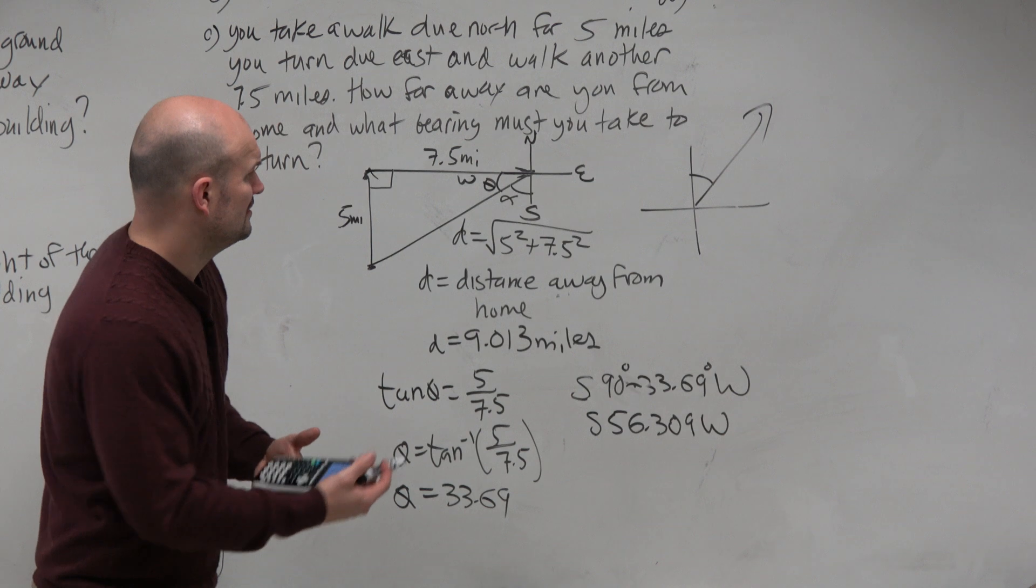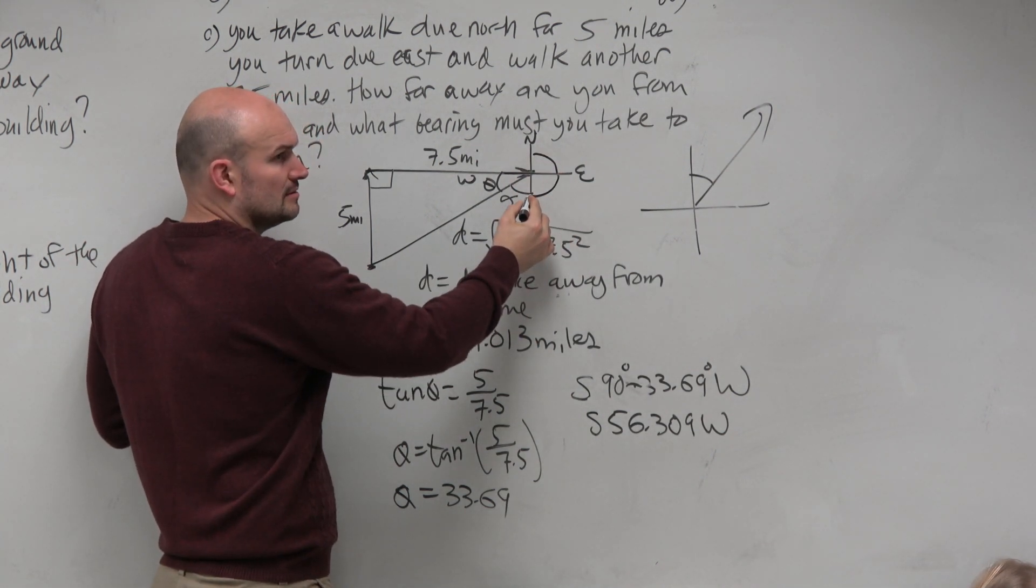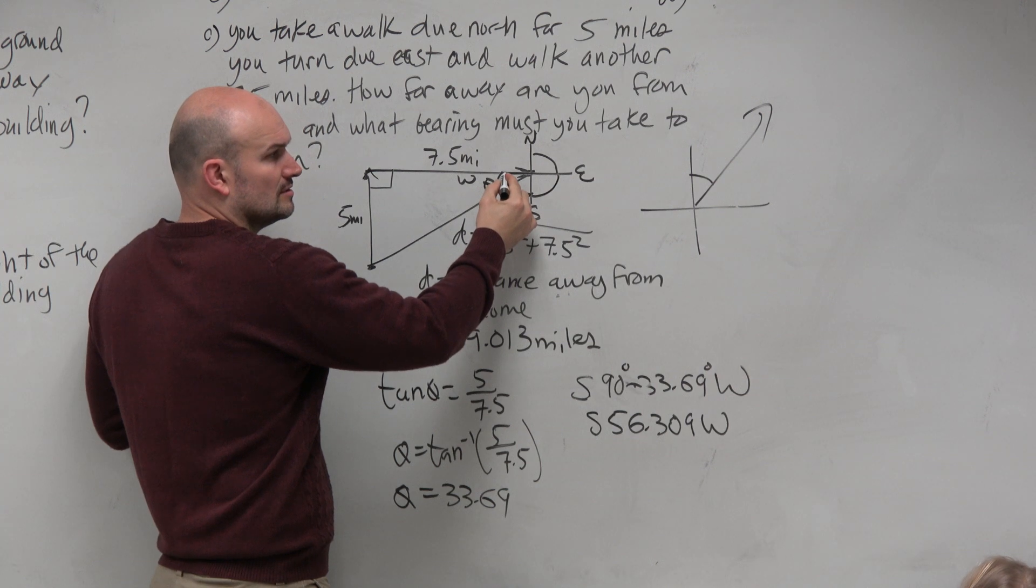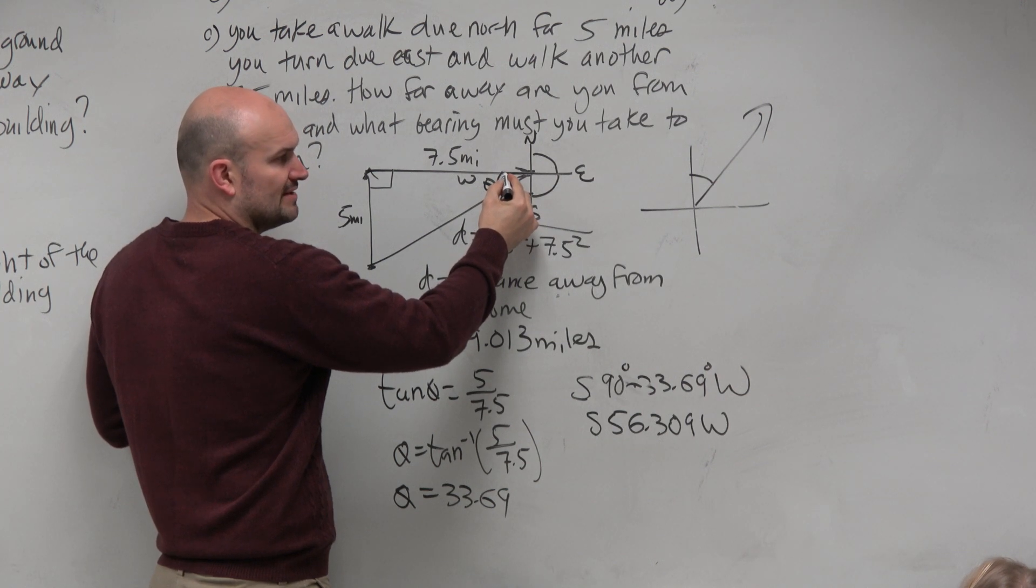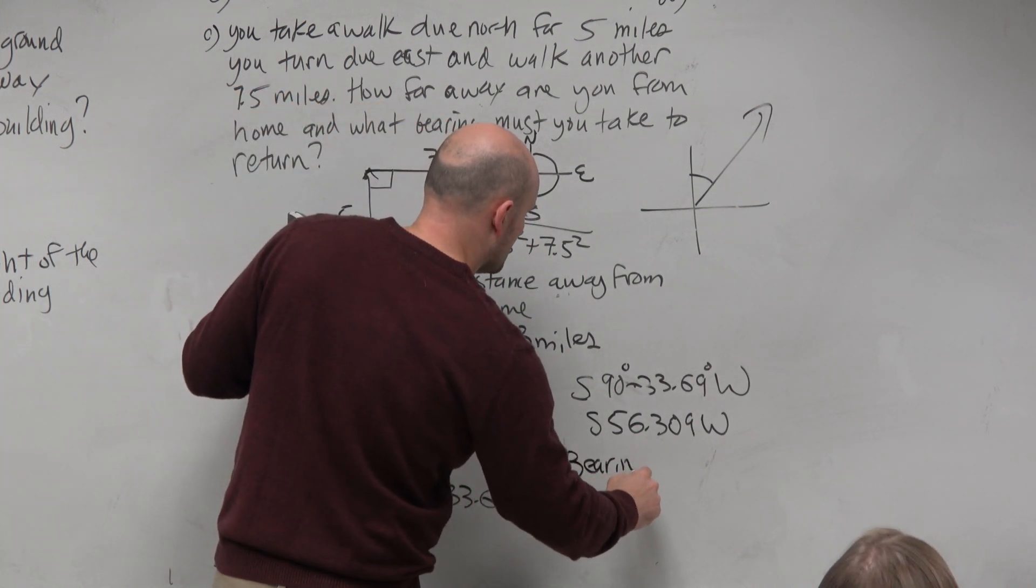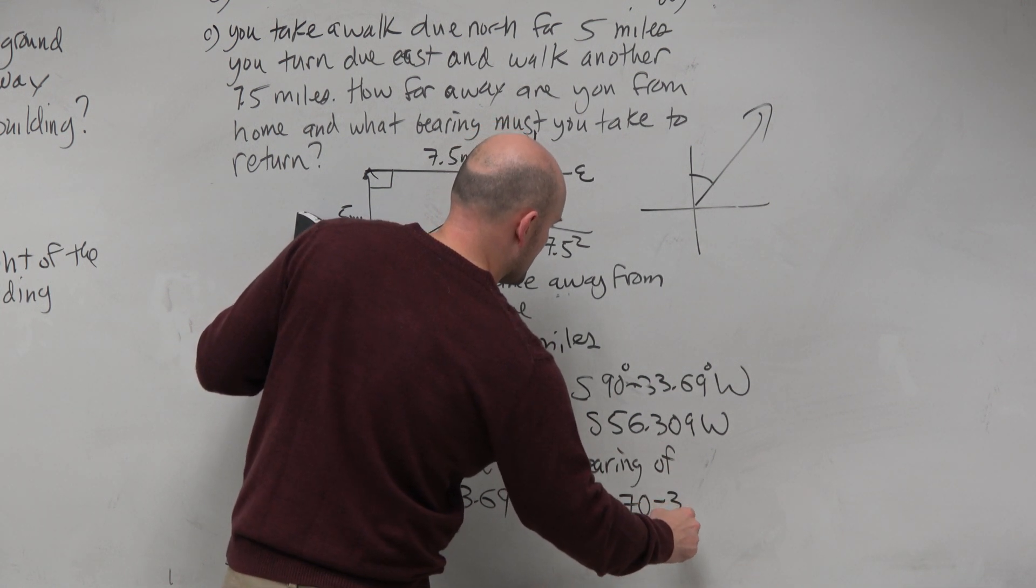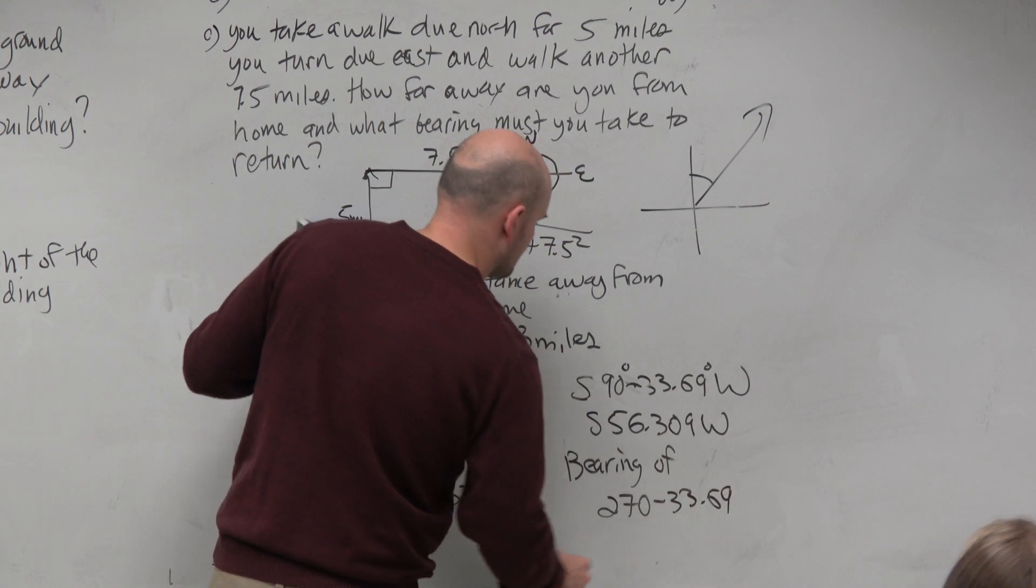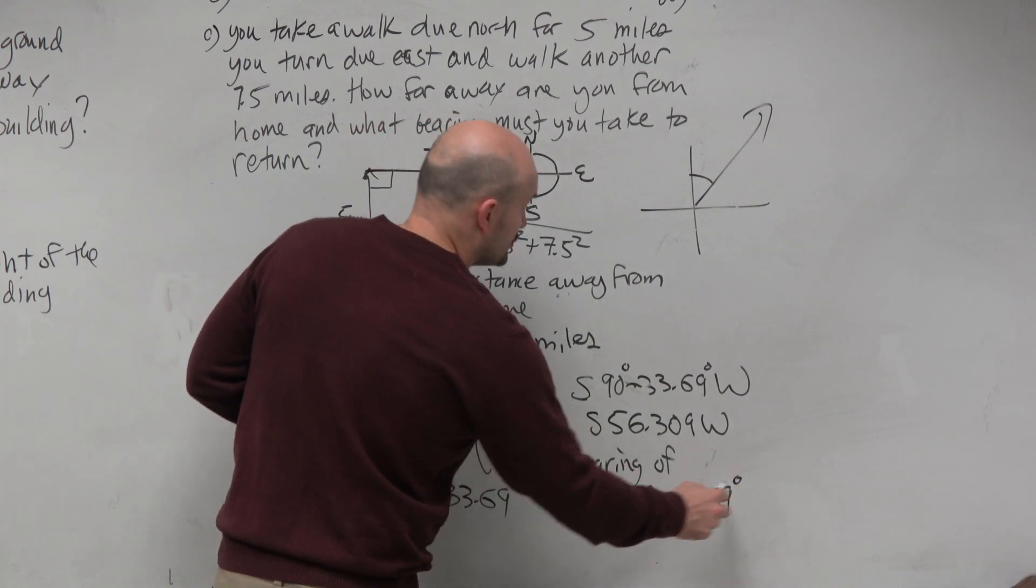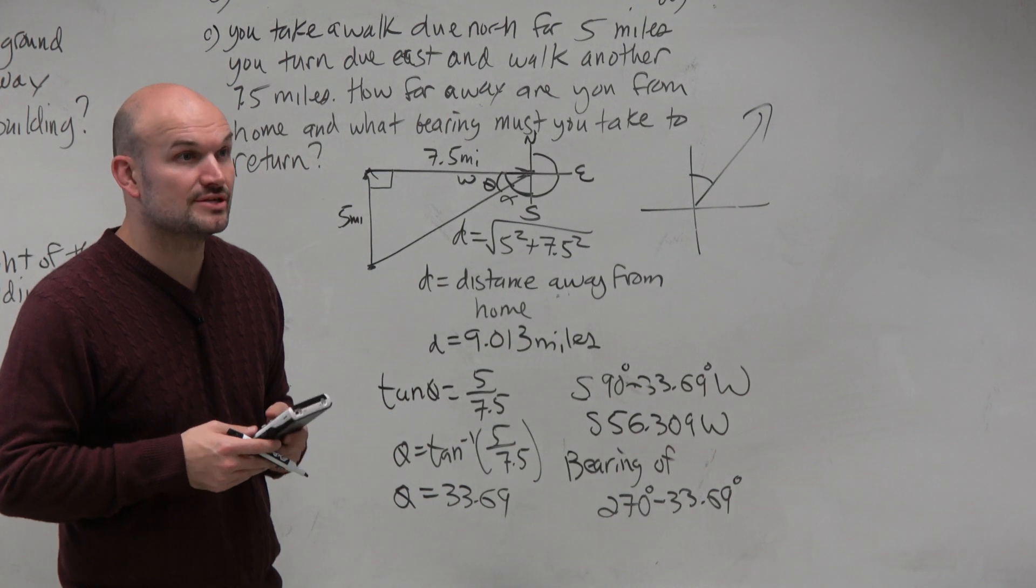Or, guys, how far is it from here to here? 90. From here to here? Here to here? Couldn't you just do 270 minus theta? Yeah. So you could just say a bearing of 270 minus 33.69. You could do it that way, too. So again, whichever way, whatever makes sense to you.